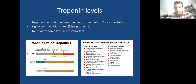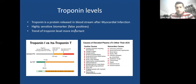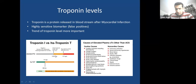We use troponin for diagnosis and management — a highly sensitive biomarker, but it gives many false positives. Always use clinical judgment. The trend of troponin is more important than an isolated value. Most centers have moved to highly sensitive troponin, looking at values of 14 nanograms/L and trends rather than the old 0.05 threshold. There are many causes of raised troponin, so clinical history is key.